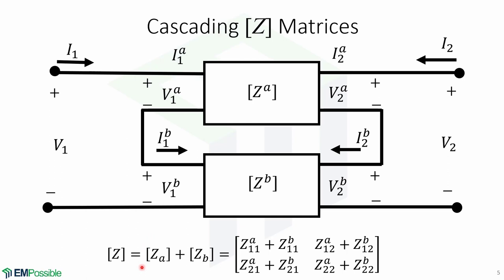Now we can combine the matrix ZA and ZB to a single matrix by just adding the individual impedance elements for each component.